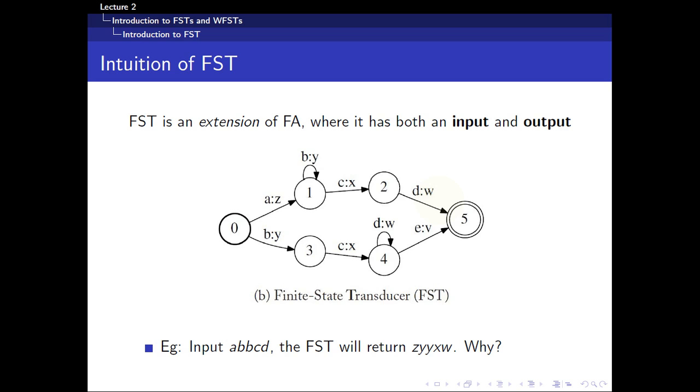The main difference between a finite automaton and a transducer is that a transducer has both an input and an output. By conventional notation, the output in front here is the input and the letter next to it will be an output.